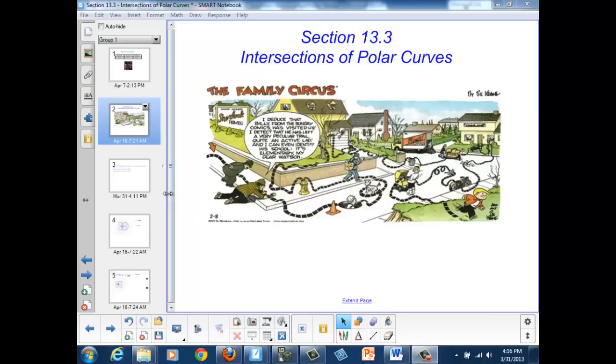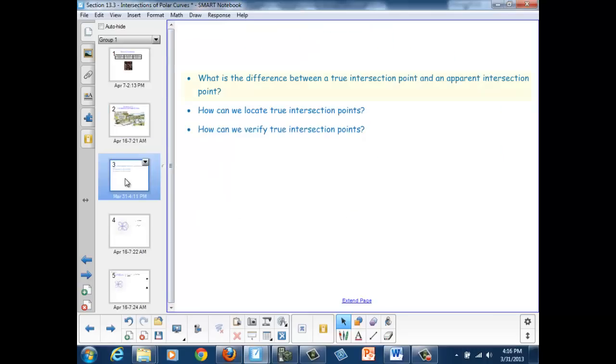At the end of this section, we should be able to answer these questions. What is the difference between a true intersection point and an apparent intersection point? How can we locate true intersection points? And how can we verify true intersection points?